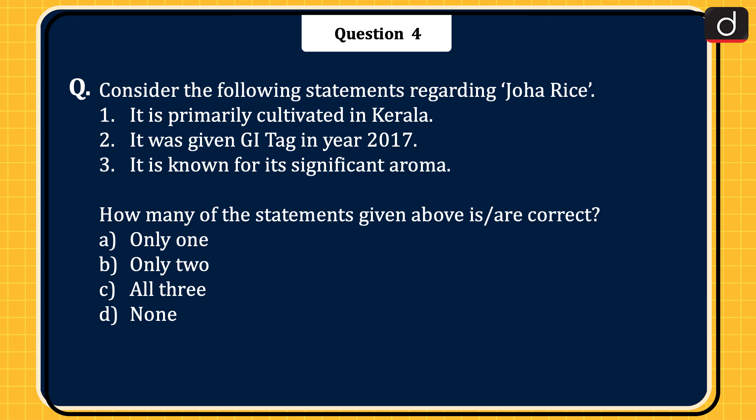Next question: Consider the following statements regarding Johar rice. 1. It is primarily cultivated in Kerala. 2. It was given a GI tag in the year 2017. 3. It is known for its significant aroma. How many of the statements given above is/are correct? Only one, only two, all three, or none. The correct answer is Option B, only two.